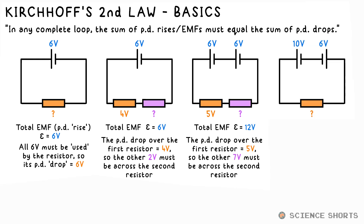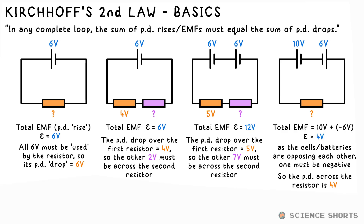If batteries or cells are facing in opposite directions, then one must be positive and the other negative. So let's say we have 10 volt and 6 volt batteries facing each other — we still find the sum of the EMFs, but one of them is negative, so the total EMF is 4 volts. So that must also be the PD across the resistor.